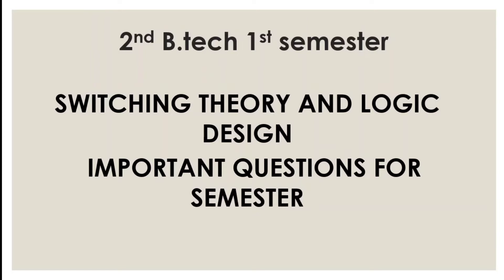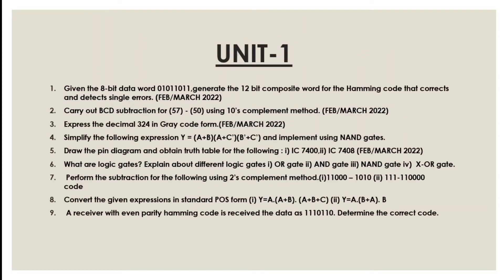Unit 1, first question: Given the 8-bit data word 01011011, generate the 12-bit Hamming code that corrects and detects single errors. Carry out BCD subtraction for 57 minus 50 using the tens complement method. Expand the decimal 3 to 4 in Gray code form.